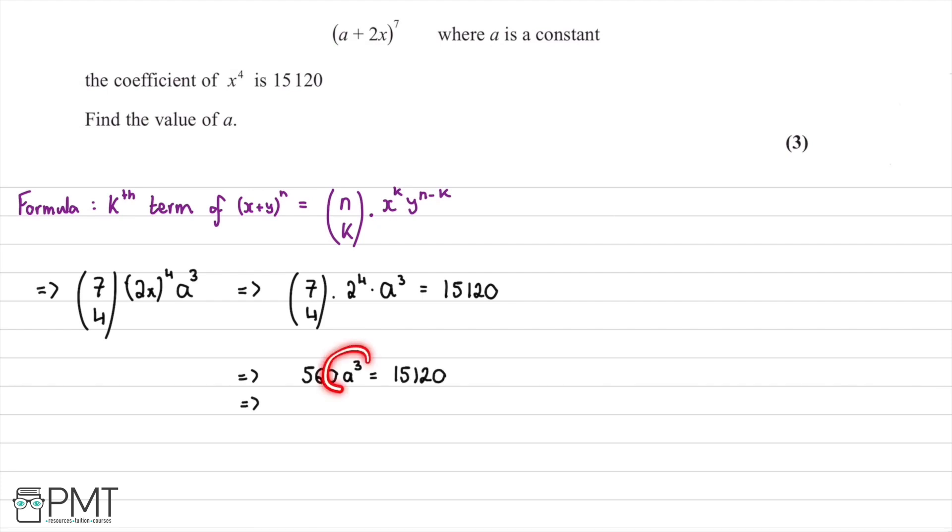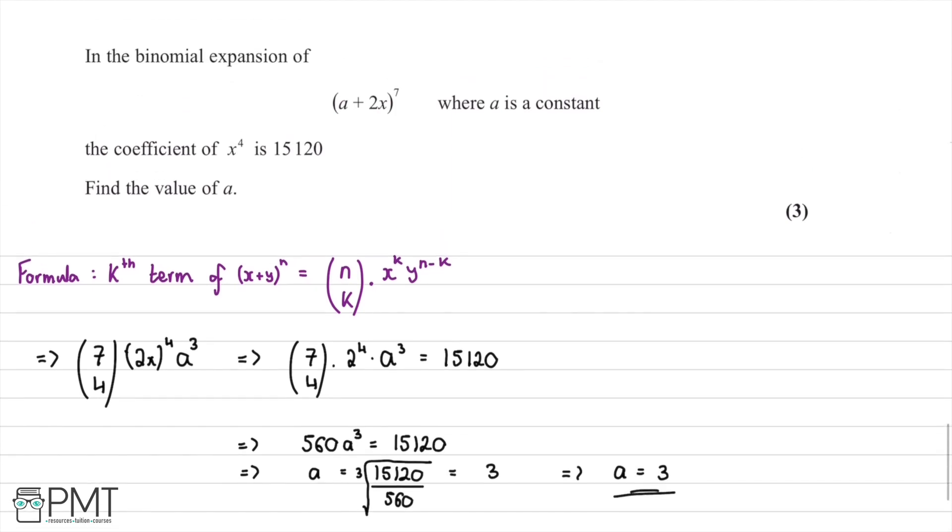Therefore, we're wanting to solve for a. a cubed equals 15,120 divided by 560. We take the cubed root of this fraction, and putting this into our calculator, this comes out as 3. Therefore, we can conclude that a equals 3, and that's us completing this question.